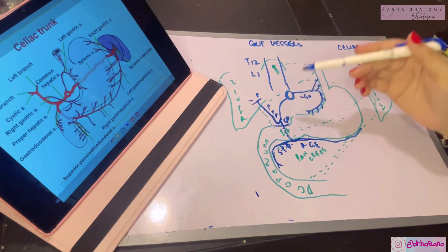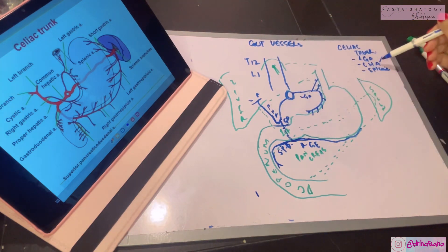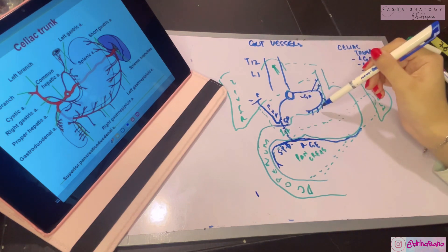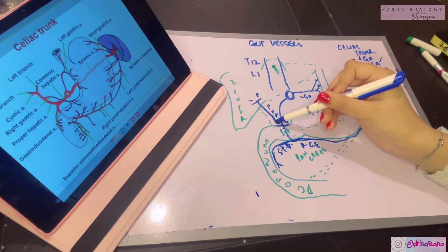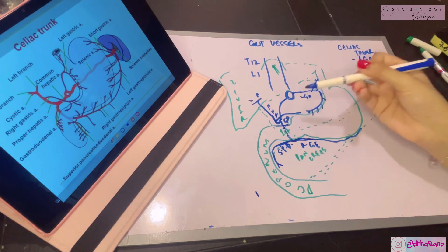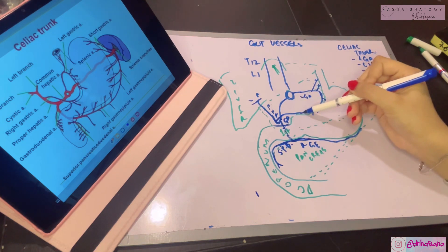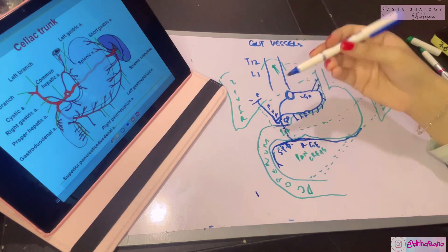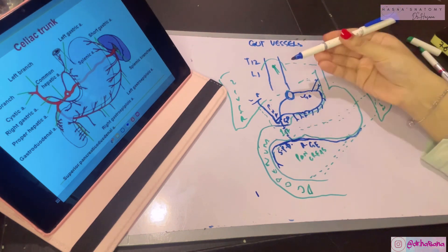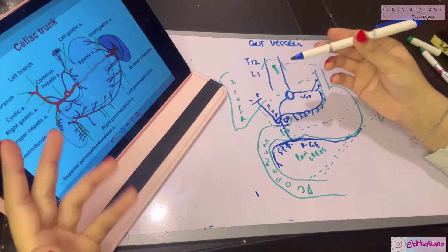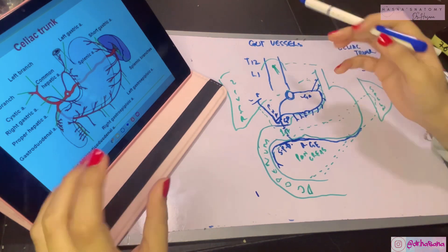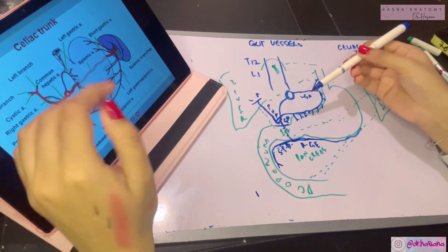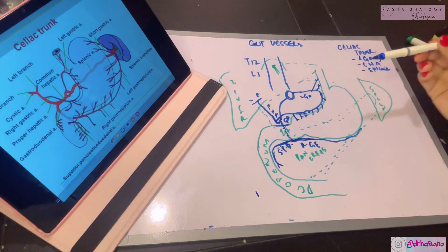The next branch from the proper hepatic artery is the right gastric artery, which runs towards the lesser curvature within the lesser omentum. It ends by supplying the lesser curvature and anastomosing with the left gastric artery, completing the full circle. It's very important to go step by step — learning the tiny details sequentially makes the overall diagram much less intimidating.